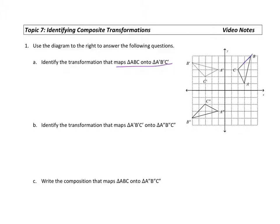Looking at the graph on the right, I see ABC getting mapped onto the prime triangle A prime B prime C prime. We work with this the same way as before, except here we're not given the scaffolding or the table — we have to come up with it on our own.